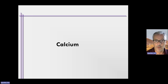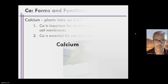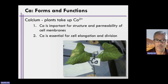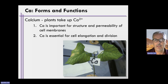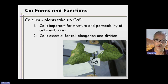Let's focus some attention on the forms and functions of calcium within plants. When plants take up calcium, they take up calcium as a calcium ion, calcium 2+. In plants, calcium is highly important for structure and the permeability of cell membranes, or preventing the permeability of cell membranes. Calcium is also essential for cell elongation and division.